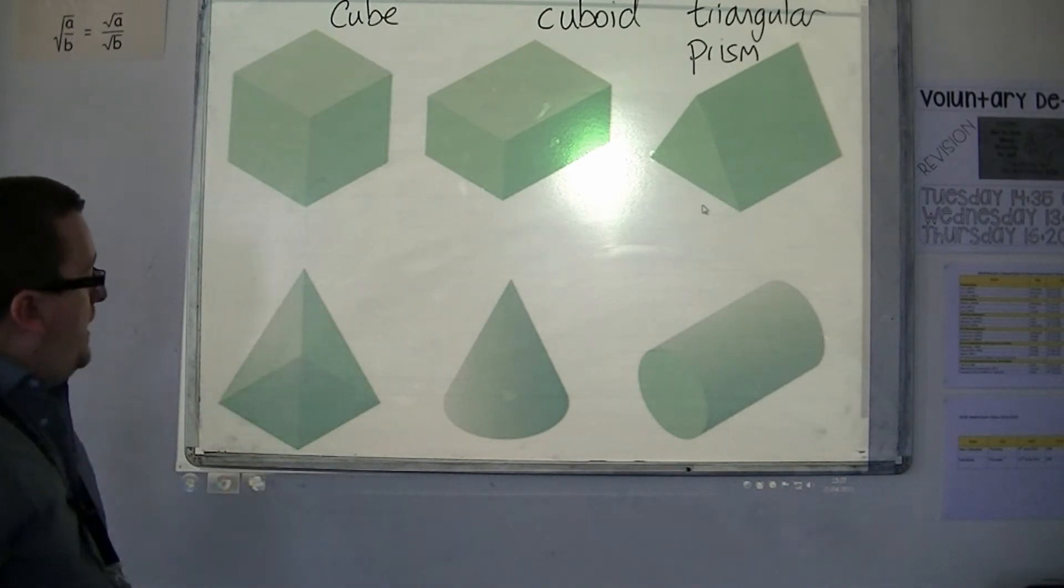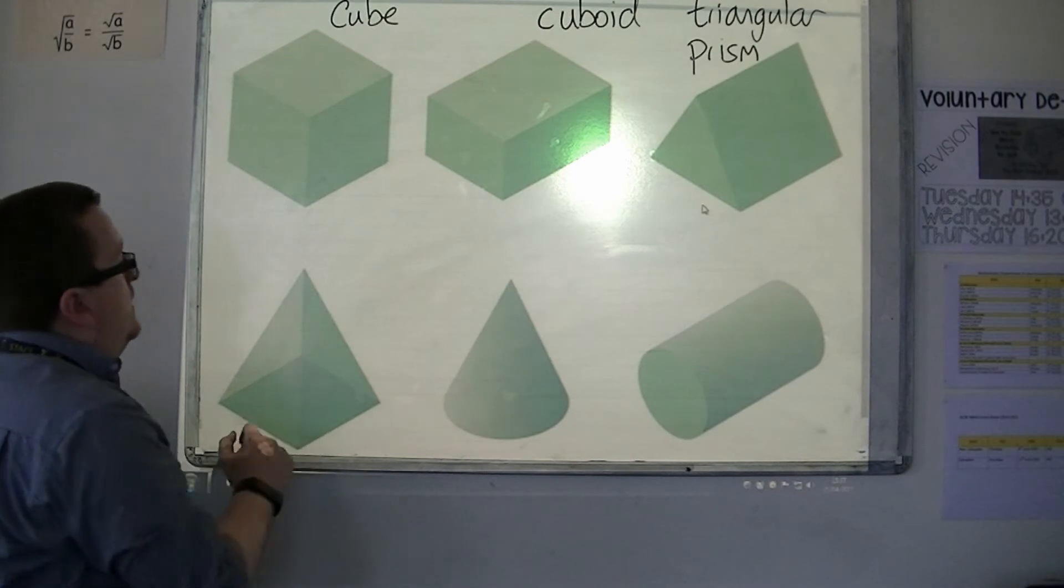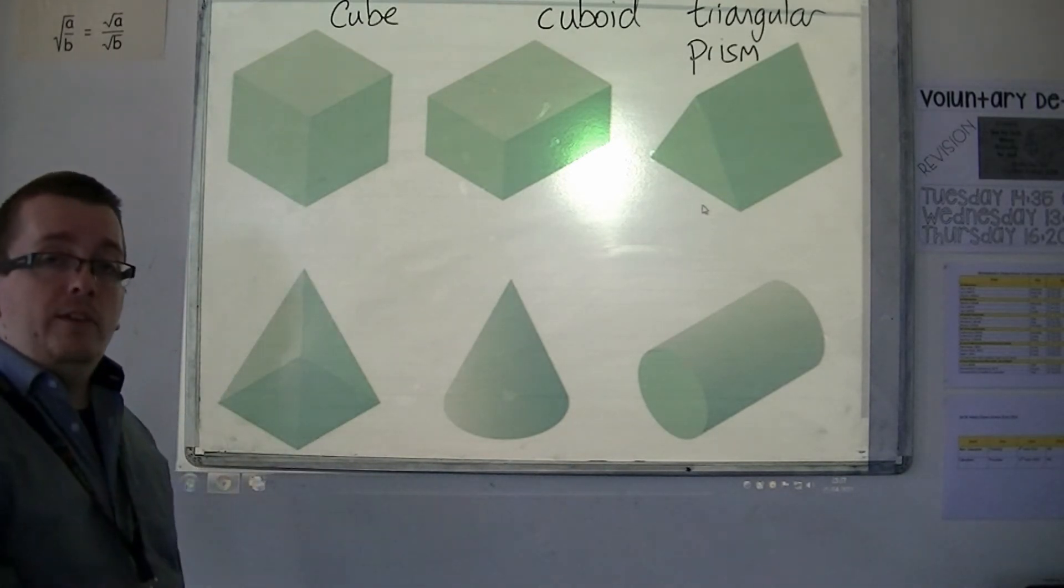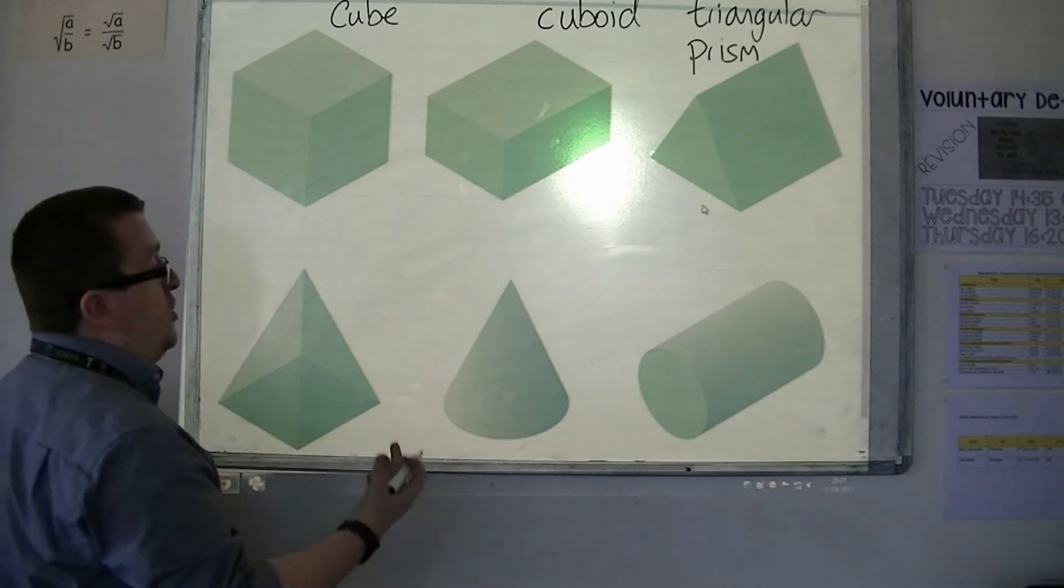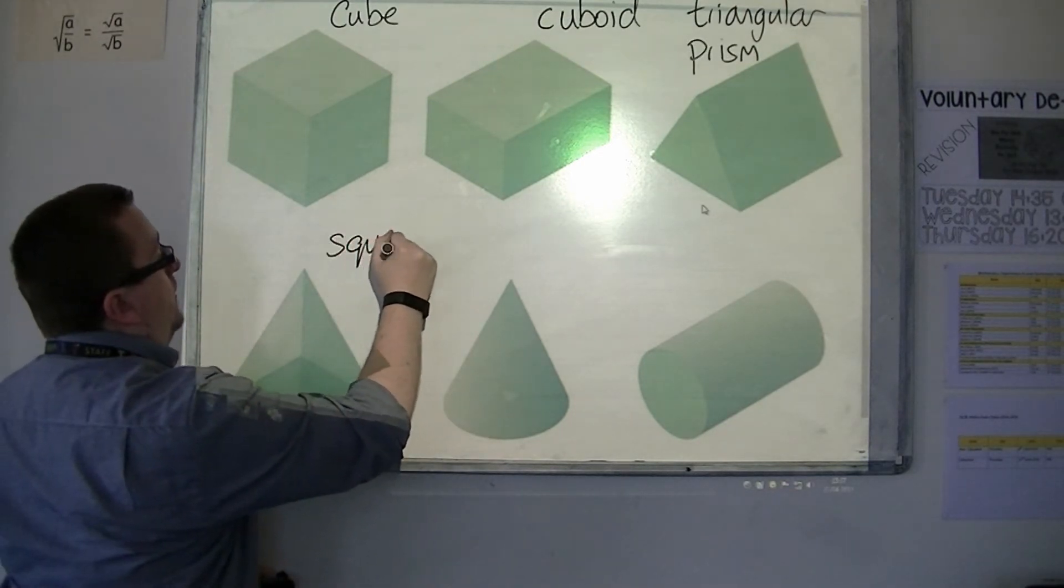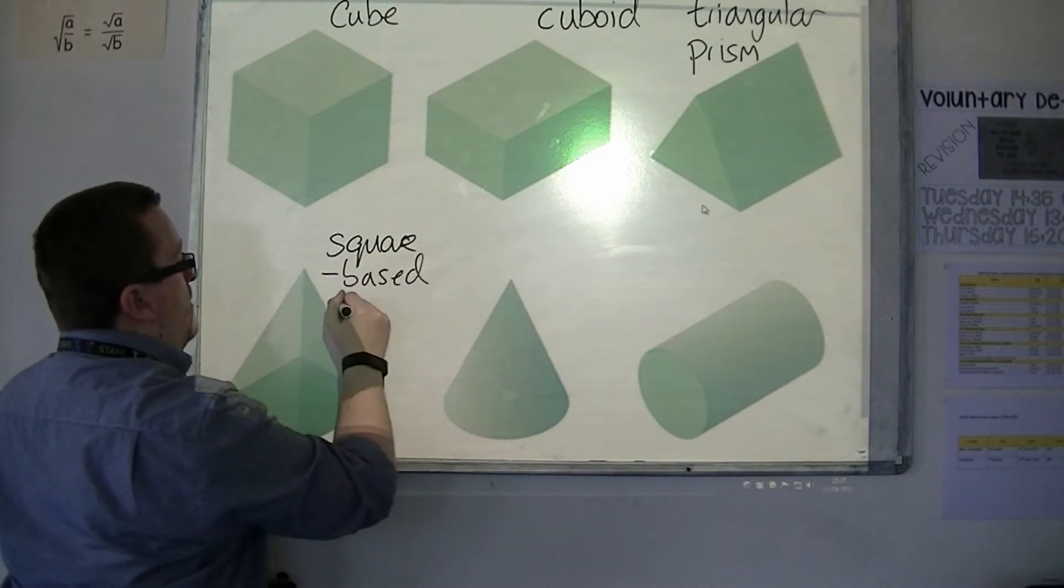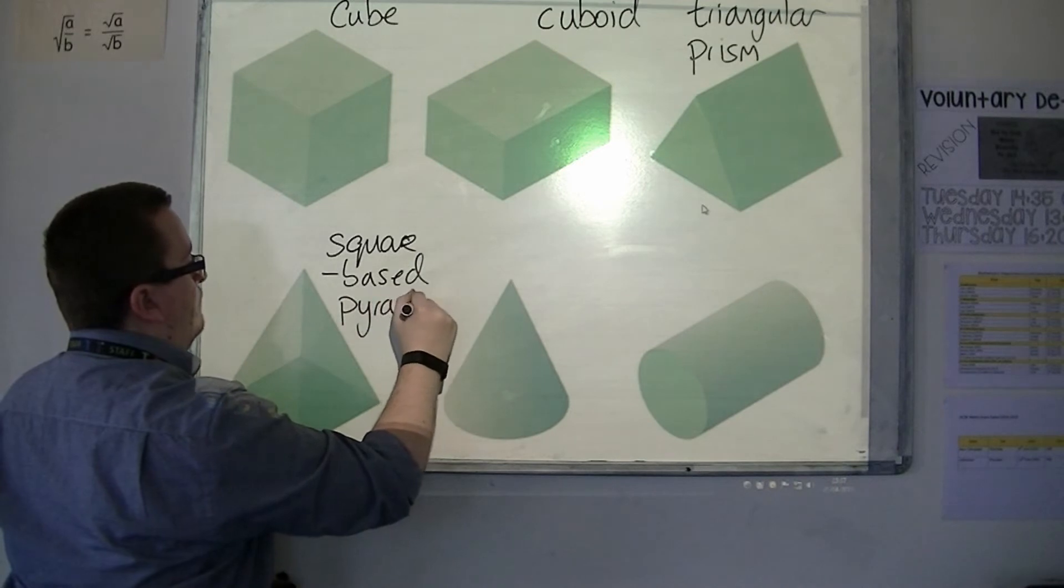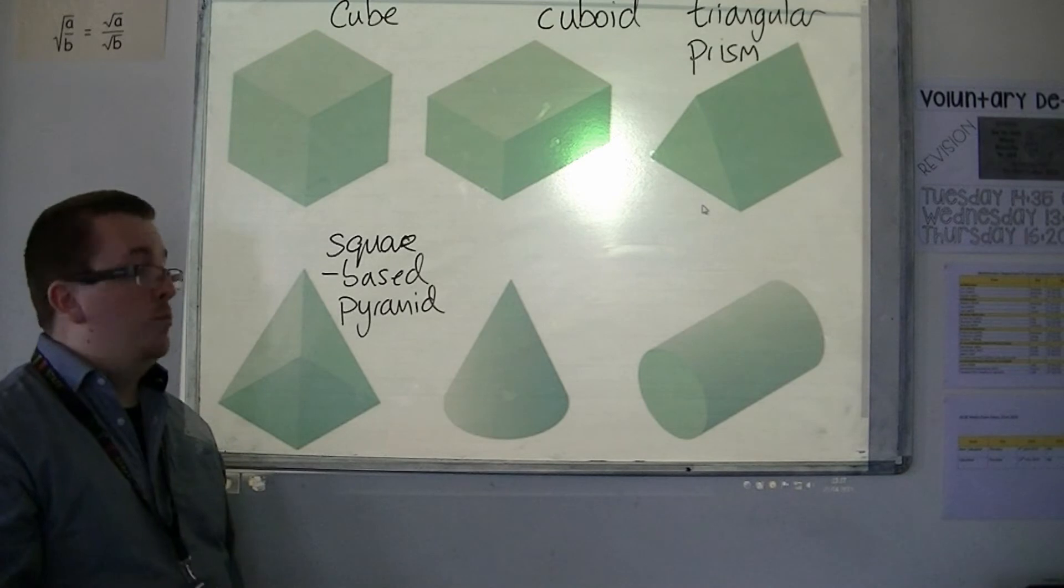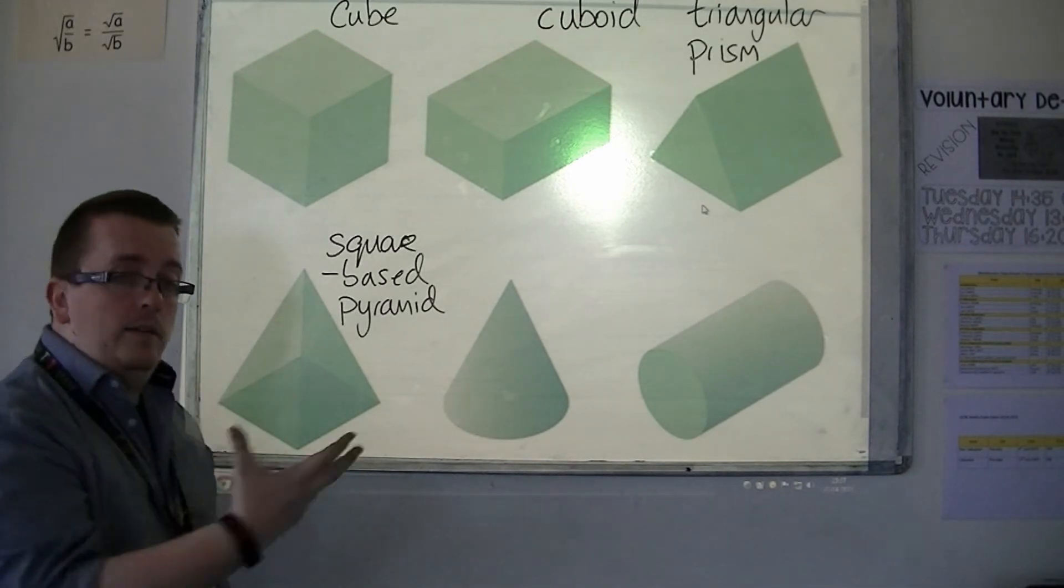This shape here, we've got a square base, and this is referred to as a square-based pyramid. So like the Egyptian pyramids, the Pyramids of Giza, this is a square-based pyramid. It's quite a complicated shape if you're doing anything like volume with it, but that would be a higher level.